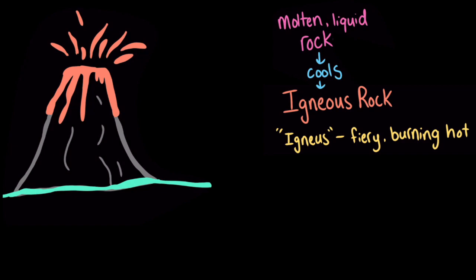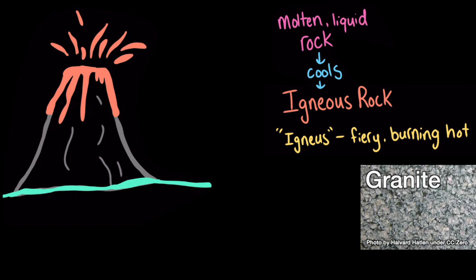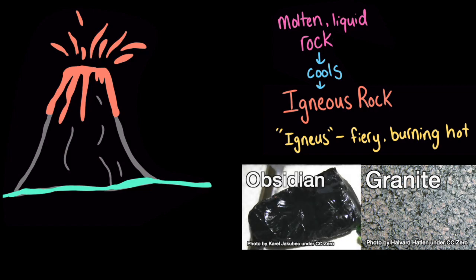One common kind of igneous rock is granite, which you've probably seen in bridges, buildings, and countertops. Another kind of igneous rock is obsidian, which is smooth and glassy, and is sometimes used to make knife blades. Both of these rocks were made of molten rock. So why do they look so different?